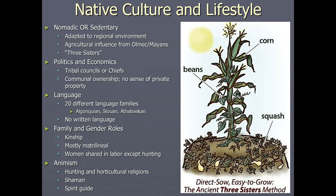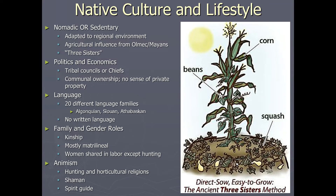Language families developed, and there was hardly any written language, so much of Native American history is done through research rather than written records. They had hieroglyphics in some cases, but most villages did not. Family roles tended to be matrilineal, with women sharing in labor except for hunting. Depending on where they lived — fertile ground or western regions — tribes were either more agricultural or more focused on hunting and gathering.